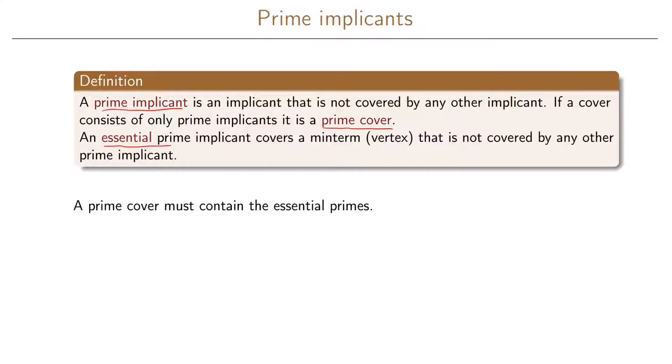An essential prime implicant will cover a minterm or a vertex in our n-dimensional Boolean space that is not covered by any other prime implicant. From this it is clear that the prime cover must contain all the essential primes that we have.